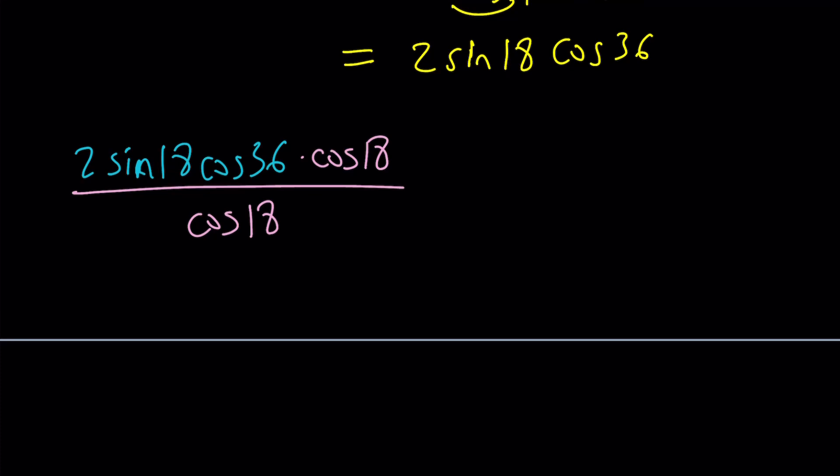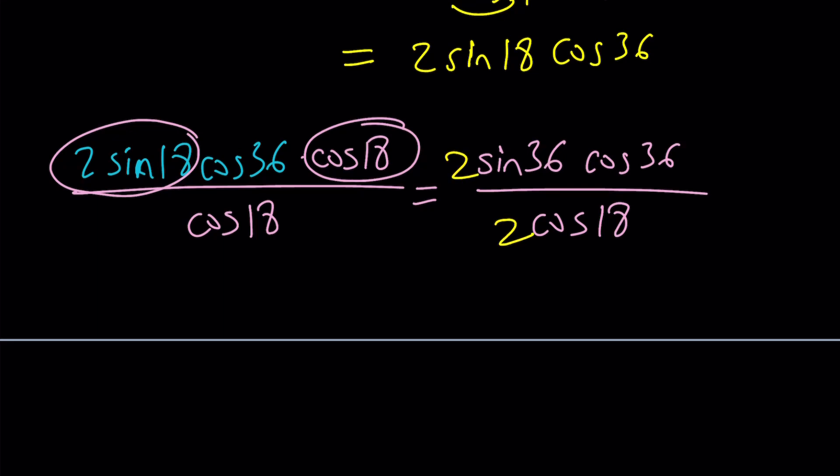I'm going to multiply this expression by cosine 18 and divide by cosine 18, because that's one. The reason I'm doing it is because sine 18 with cosine 18 from double angle formula gives me sine 36. And cosine 36 is already there. I'm getting the double angle again, but you're missing the 2, so multiply by 2. This is sine of 72 divided by 2 cosine 18. 18 and 72 are complementary angles, so they're equal. I end up with 1 half again. So the answer is cosine of 36 degrees minus cosine of 72 degrees is 1 half.